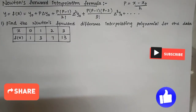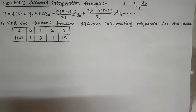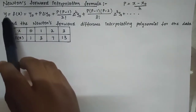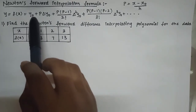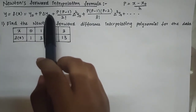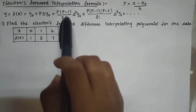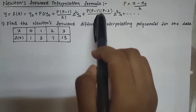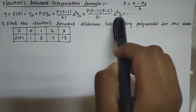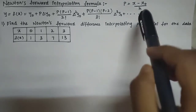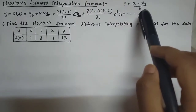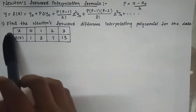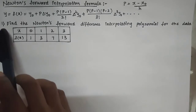Hello everyone, welcome to our channel. Today we learn a topic called Newton's forward interpolation formula. The formula is y = f(x) = y₀ + p·Δy₀ + p(p−1)/2! · Δ²y₀ + p(p−1)(p−2)/3! · Δ³y₀ and so on. To find p: p = (x − x₀)/h, where h is the difference between consecutive x values.